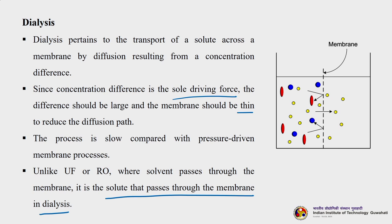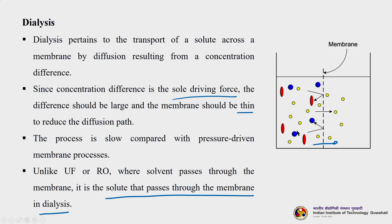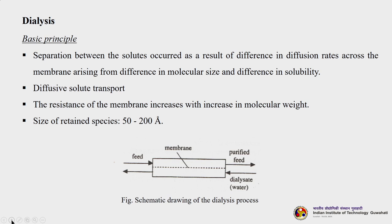Three types of solutes are shown here. Small solutes (yellow) permeate through the membrane, whereas large solutes (blue and red), by virtue of their size, are retained on the surface of the dialysis membrane. Separation between solutes occurs as a result of differences in diffusion rates across the membrane, arising from differences in molecular size as well as solubility.